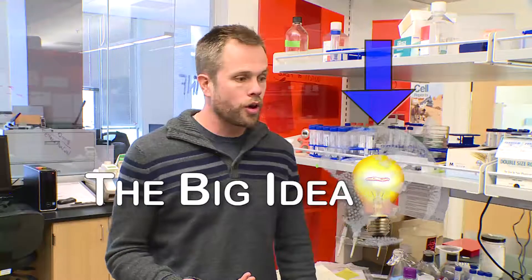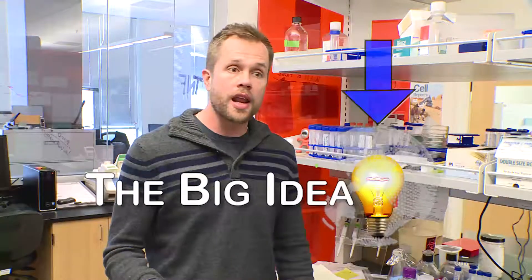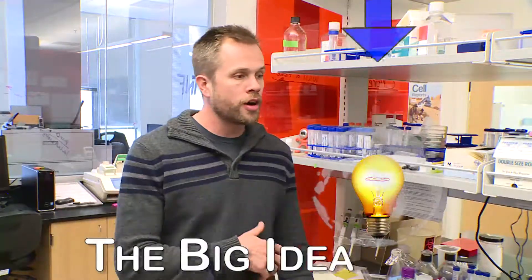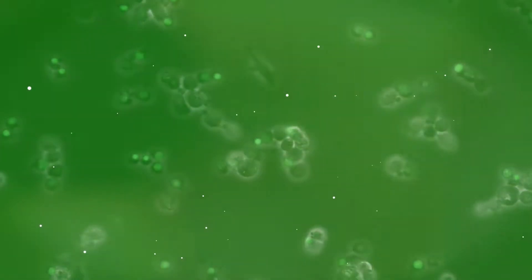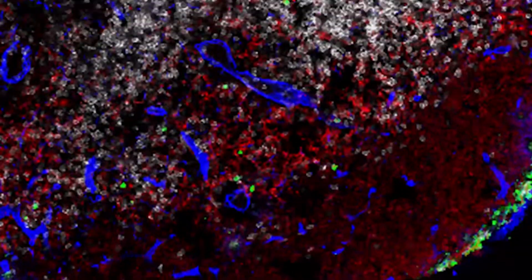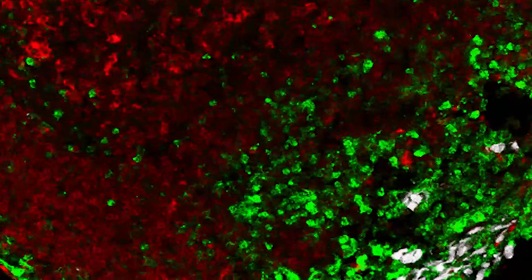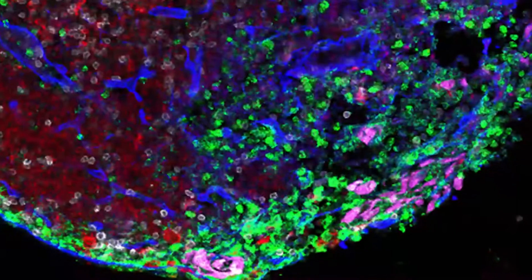One of the ideas we're exploring now is whether the way that a cell dies will determine how the immune system sees that cell as it's dying. One application could be to kill cancer cells in ways that notify and activate the immune system, which might allow the immune system to fight the cancer more effectively.